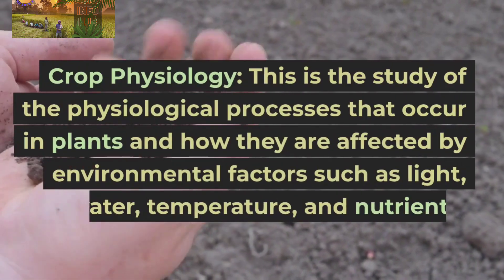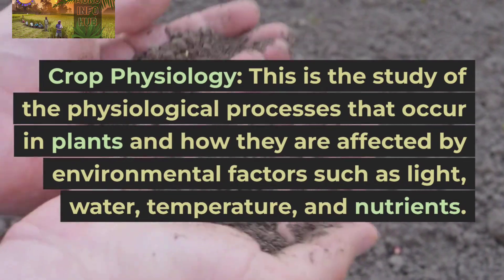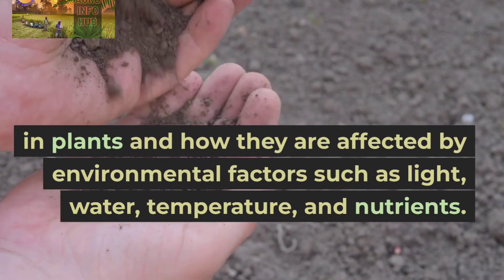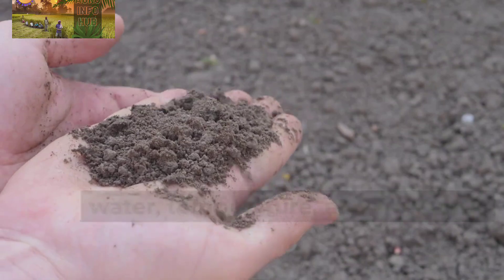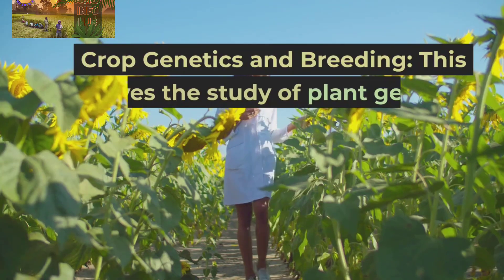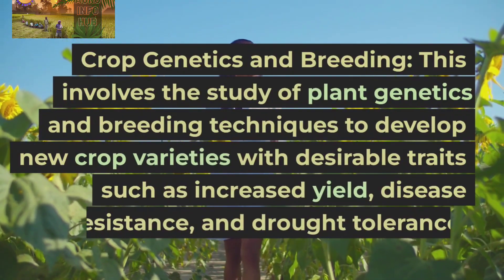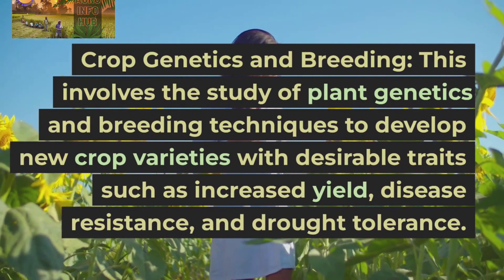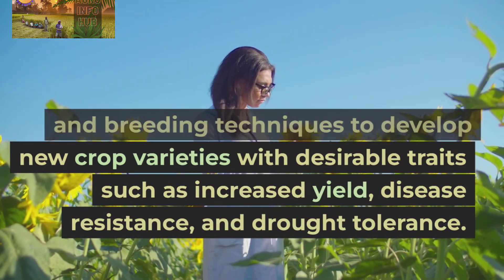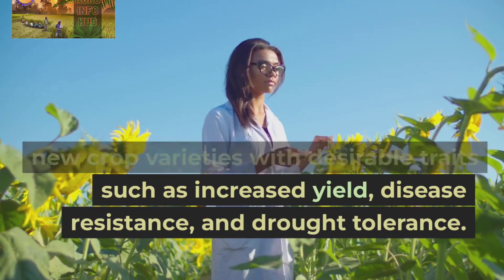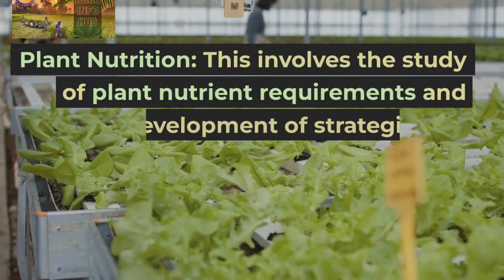Crop physiology is the study of the physiological processes that occur in plants and how they are affected by environmental factors such as light, water, temperature, and nutrients. Crop genetics and breeding involves the study of plant genetics and breeding techniques to develop new crop varieties with desirable traits such as increased yield, disease resistance, and drought tolerance.